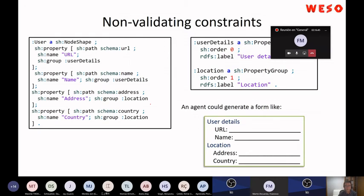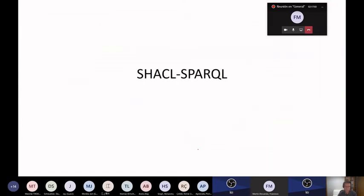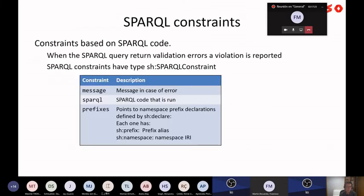There are also non-validating features, such as declaring the display order of properties in a user interface — for example, user details should appear before location. The last major part of SHACL is SHACL SPARQL: while SHACL Core provides a set of built-in constraint components, SHACL SPARQL allows you to define custom constraint components using plain SPARQL queries.